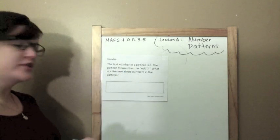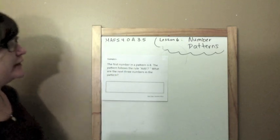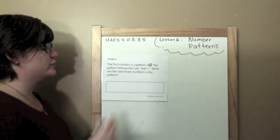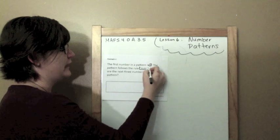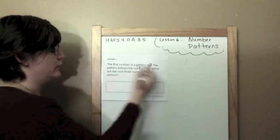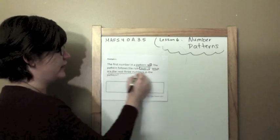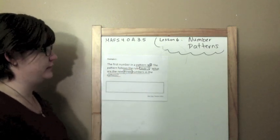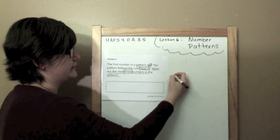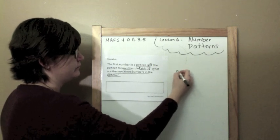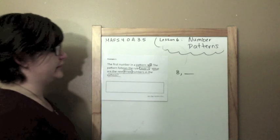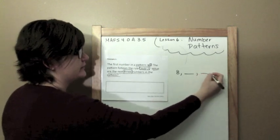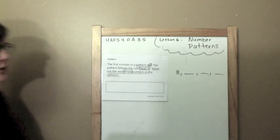The first number in a pattern is 8. The pattern follows the rule, add 7. What are the next three numbers in the pattern? Alright, so the first number in the pattern is 8. The rule is add 7. I need to find the next three numbers.